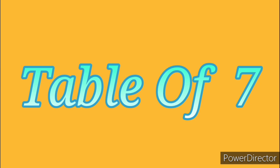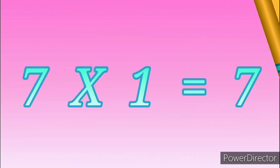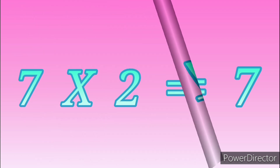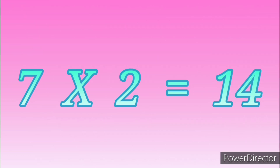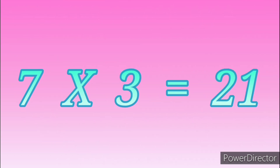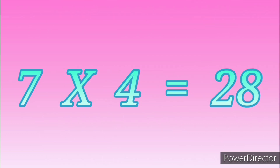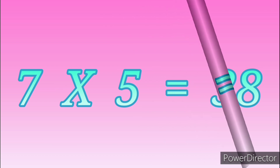Table of Seven. Seven ones are seven. Seven twos are fourteen. Seven threes are twenty-one. Seven fours are twenty-eight.